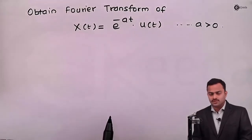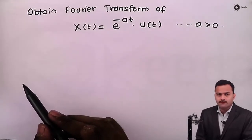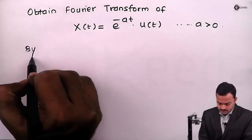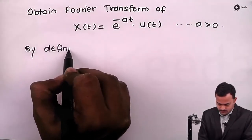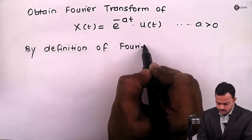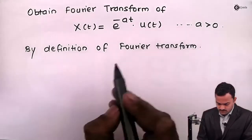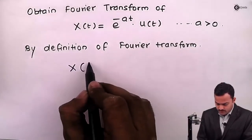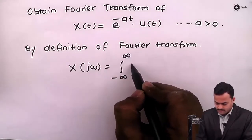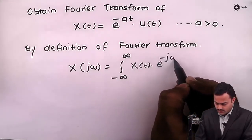By using the definition of Fourier transform, we need to find out the Fourier transform of x(t), and we will plot the magnitude and phase plot of this. By definition, X(jω) is given as the integral from minus infinity to infinity of x(t) e raised to minus j omega t, dt.